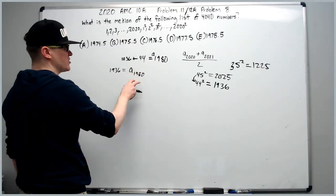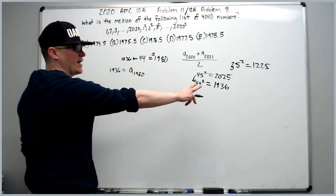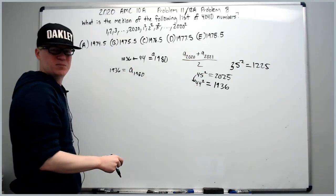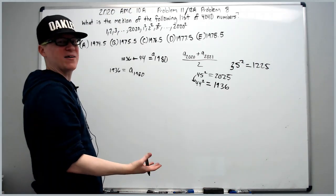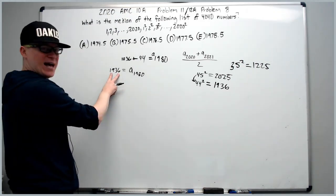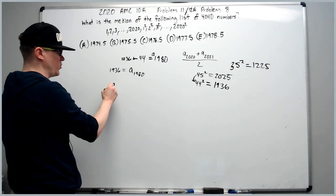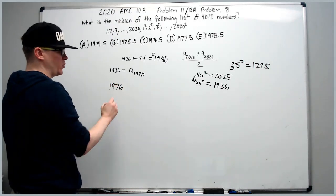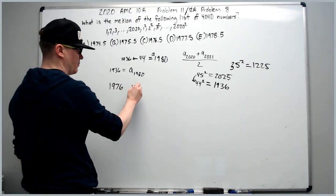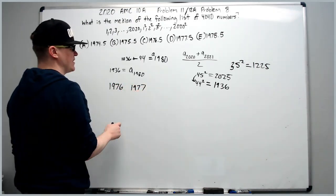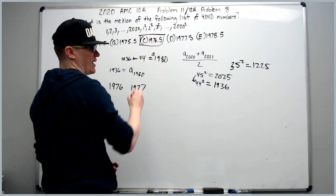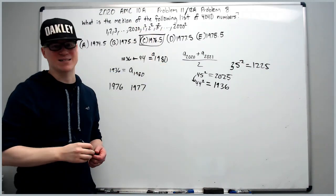So we're at term number 1980. We need to get to term number 2020, which means we have to add 40. We're at 1936, so when we add 40, we get 1976. The next number being 1977, and that takes us to answer choice C.